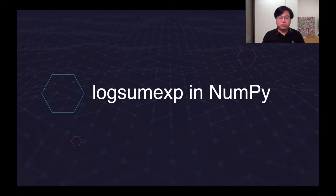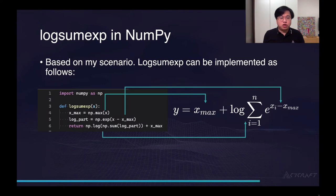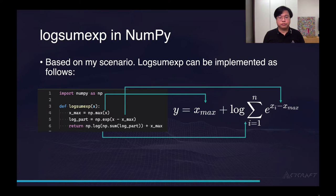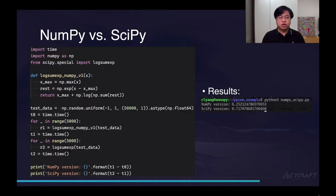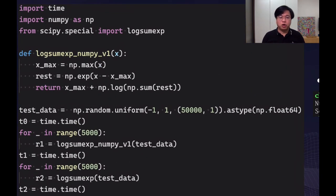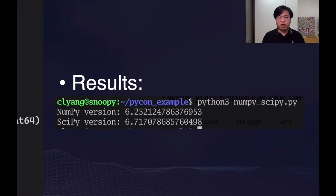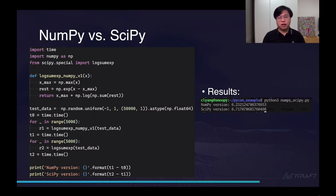How do we implement log-sum-exponential in NumPy? Since all my input data will be a one-dimensional array, log-sum-exponential can be implemented as follows. As you can see, it only takes three lines of code to finish — it's quite easy. After finishing our own version in NumPy, I wrote a simple benchmark code to compare our version versus SciPy's original function. Our version is about 0.5 seconds faster than the original SciPy function. You might think 0.5 seconds is not a lot, but if you call this function a million times a day, it will save you about half a million seconds — that's quite a lot.